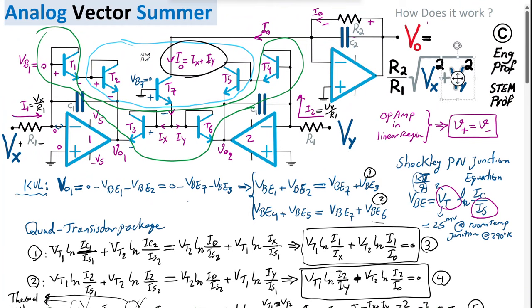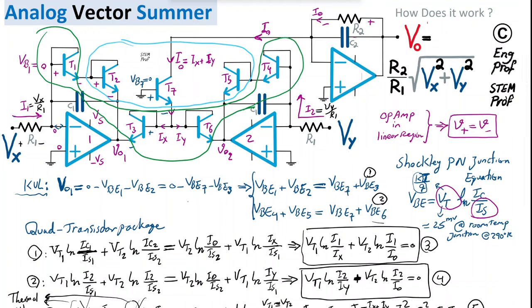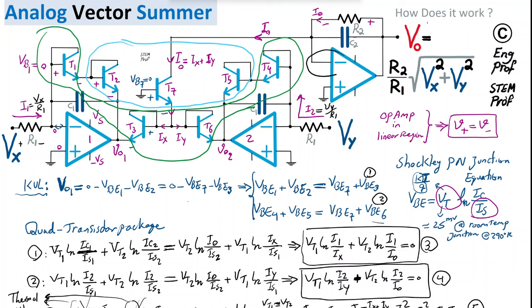The final stage handles current-to-voltage conversion. The current Iout — the collector-emitter current of T7 — passes through resistor R2. The third op-amp enforces virtual short via negative feedback, placing virtual ground at its negative terminal (positive terminal is grounded).